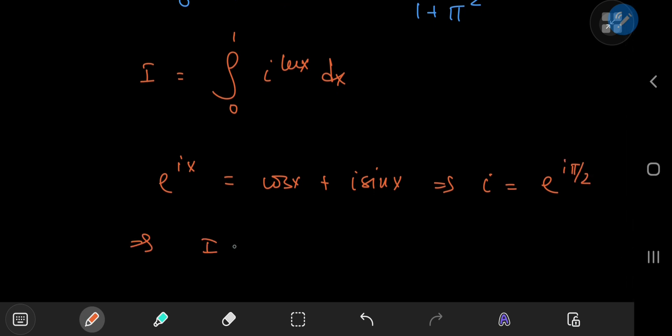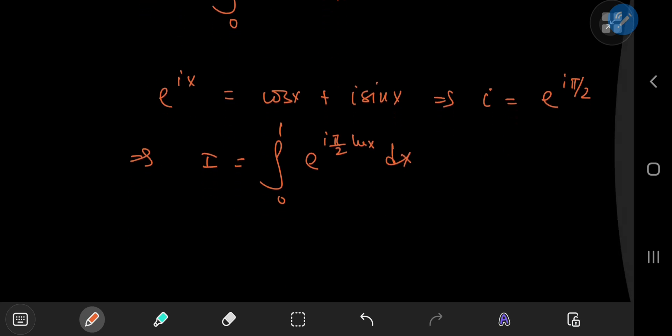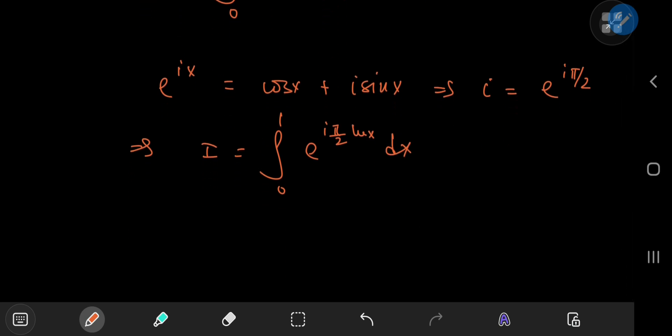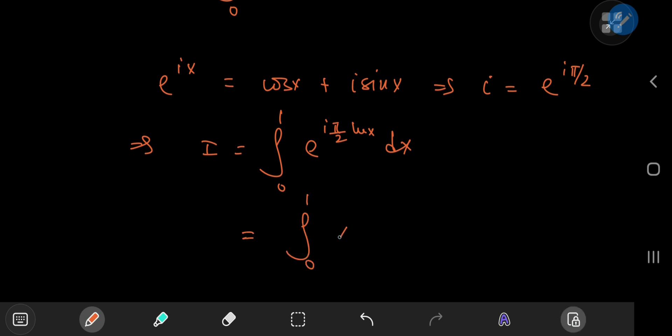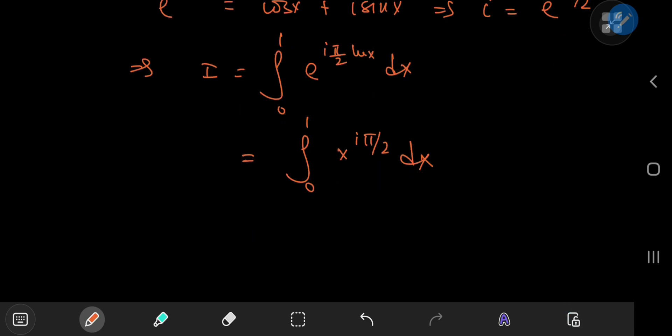So this implies that i equals the integral from 0 to 1 of e to the i pi by 2 times log x dx. And again using a correspondence with the complex power function we get the integral from 0 to 1 of x to the i pi by 2 which is again pretty simple to evaluate.